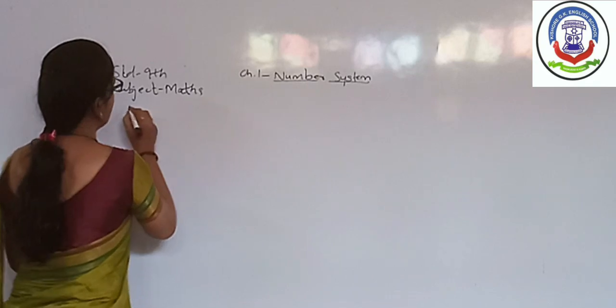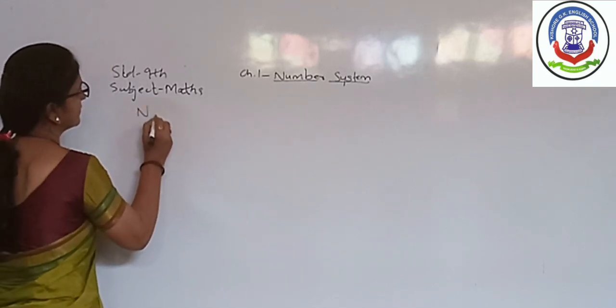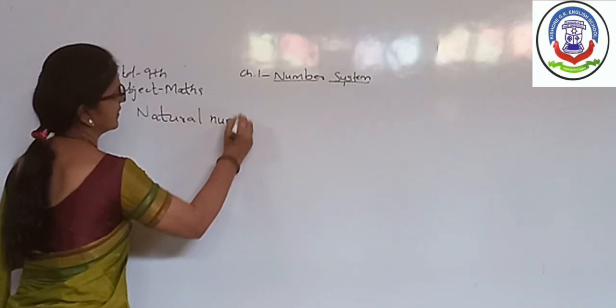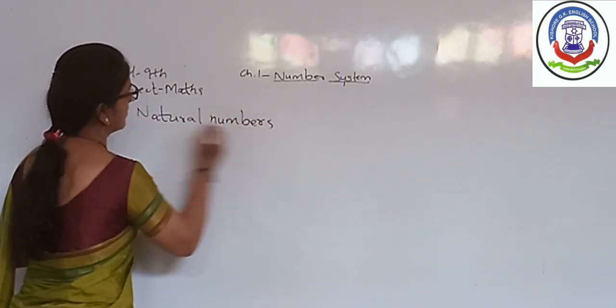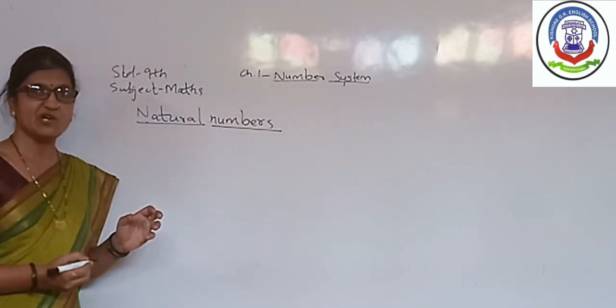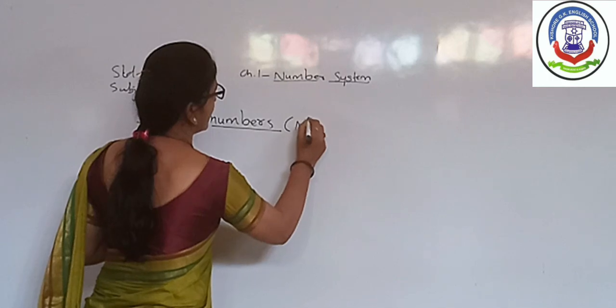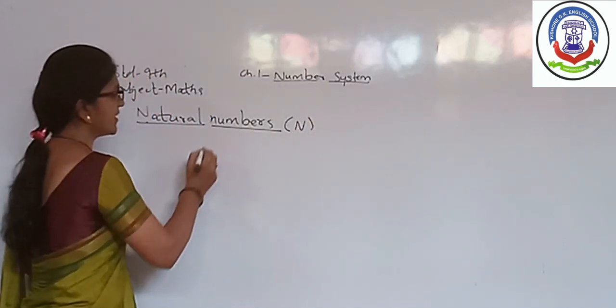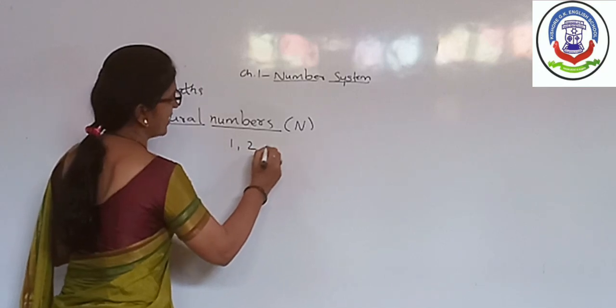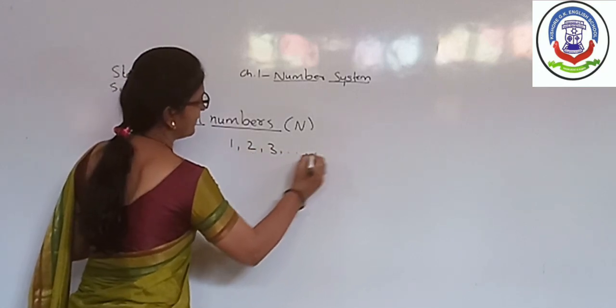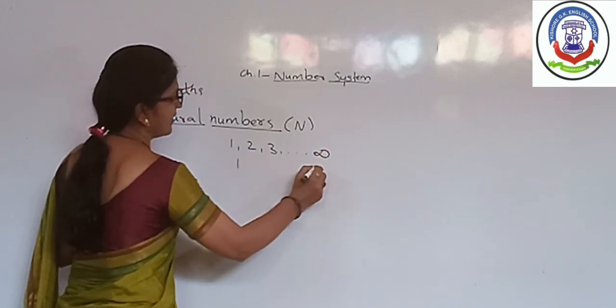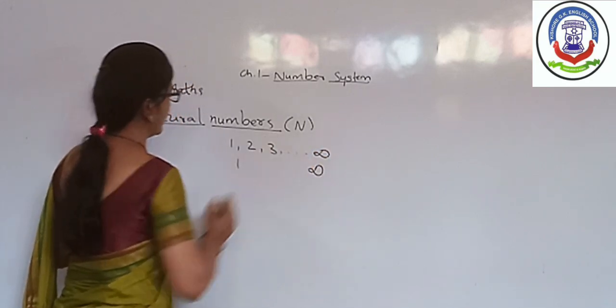First is Natural Number. The symbol which is used to represent natural number is N. N stands for Natural. These natural numbers include the numbers starting from 1 up to infinity. First member of this series is 1 and last member is infinity.